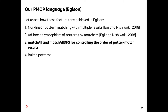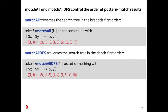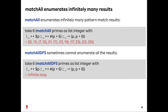Next, let me explain two syntax constructs — matcher and matcher-DFS — prepared for controlling the order of pattern match results. Matcher traverses a search tree in breadth-first order, whereas matcher-DFS traverses in depth-first order. We can see the difference when enumerating pairs of natural numbers: matcher enumerates all infinite pairs, but matcher-DFS enumerates only pairs whose first element is 1. When enumerating prime pairs of the form (p, p+6), using matcher-DFS fixes p to the first prime number 2 and causes an infinite loop.